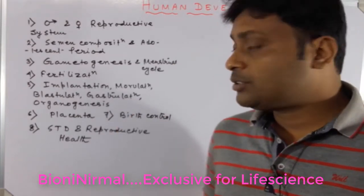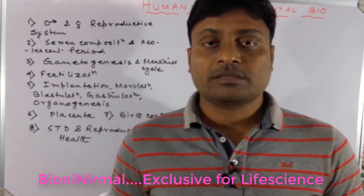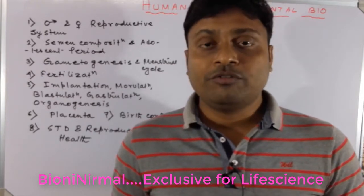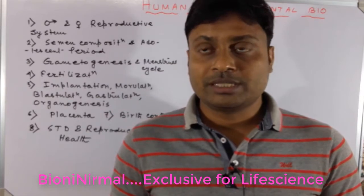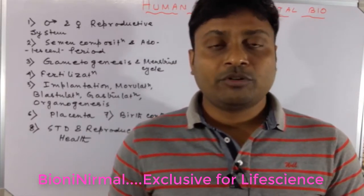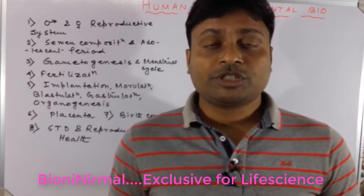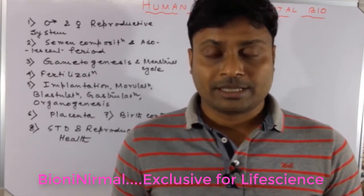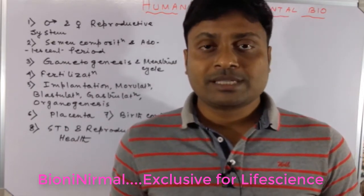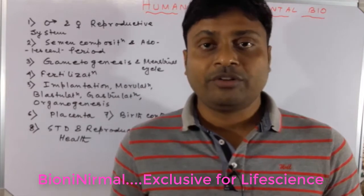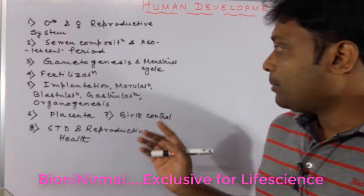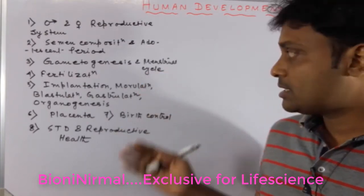Next is gametogenesis. In the testis, spermatogenesis occurs by which the sperm is produced, and in the ovary the ovum is produced — this procedure is called gametogenesis. You should know the stepwise process, as meiosis plays a crucial role during gametogenesis.